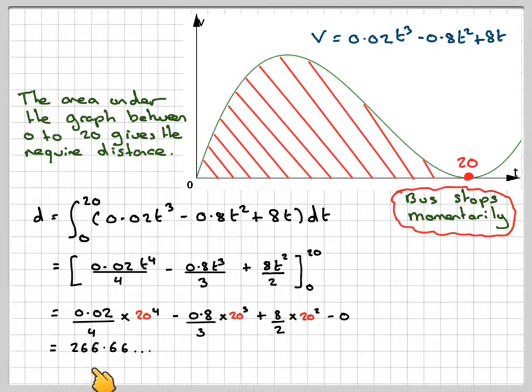Working that out, it will give you 266.66, which is 267 meters to 3 significant figures. This has been a video to show you how to find the distance from a velocity-time graph. I hope you've understood and thank you very much for watching.